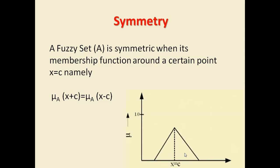The next topic is symmetry. We call a fuzzy set symmetric when its membership function around a certain point c satisfies the condition that adding or subtracting the same value from c yields equal membership values. For example, if we subtract one from c and add one to c, the membership function values at both those points will be equal. In that case, we say that this fuzzy set is symmetric.